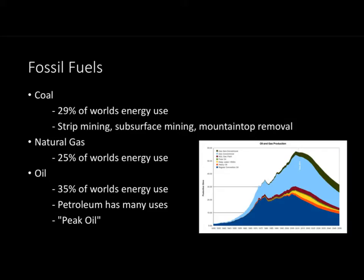Let's take a more in-depth look at fossil fuels. Coal, as an energy source, makes up about 29% of the world's energy use. There are basically three main types of ways to mine coal, all of which aren't particularly environmentally friendly. These are strip mining, subsurface mining, and mountaintop removal.